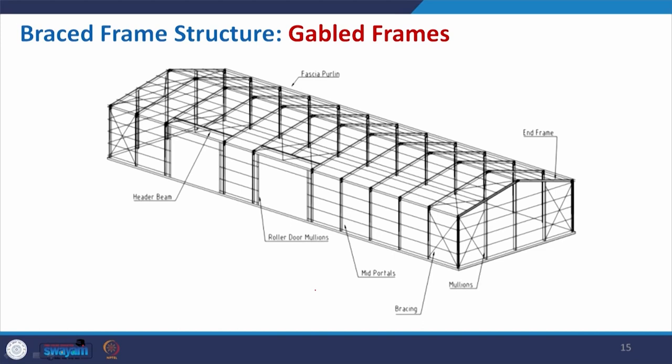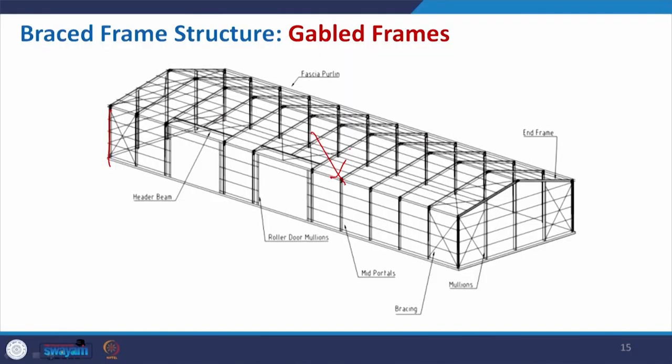This is something which is mostly being used for manufacturing units — some factories — and it is a very regular arrangement. Multiple frames are put in parallel and then covered by some light material or sometimes some translucent material, so they can maximize the daylight usage inside it. Along with that we also have the bracing to protect the structure from lateral load.